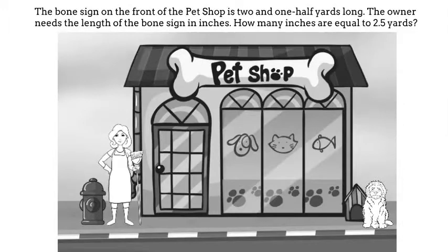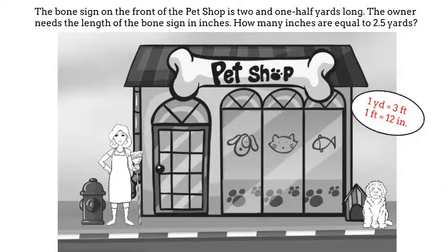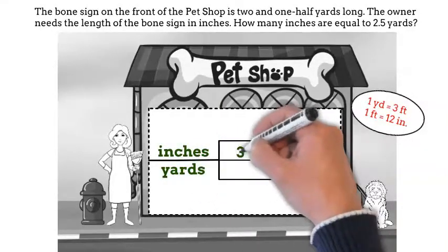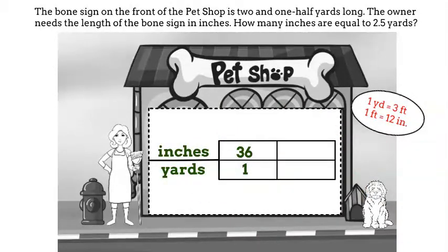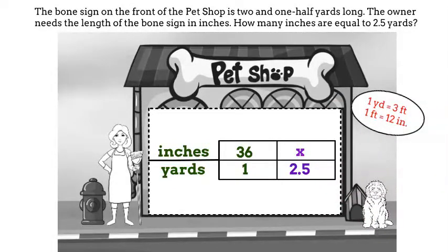I have one more measurement problem to convert before the day is over. The bone sign on the front of the pet shop is 2 and a half yards long. The owner needs the length of the bone sign in inches. How many inches are equal to 2 and a half yards? Remember, 1 yard equals 3 feet and 1 foot equals 12 inches. Since 12 times 3 is 36, that means that 1 yard is 36 inches. Let's set our graphic organizer up as inches to yards. Our first ratio will be 36 over 1. Since the 2.5 is yards, it will go in the denominator and x will go in the numerator.